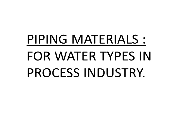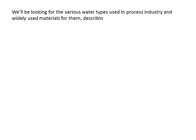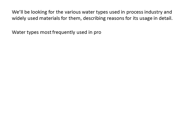In this video, the most widely used piping materials for various water services in process industry — basically refinery, petrochemical, and oil and gas — are discussed. We will be looking at various water types used in process industry and the widely used materials for them, describing reasons for their use in detail. Water types most frequently used in process industry are: